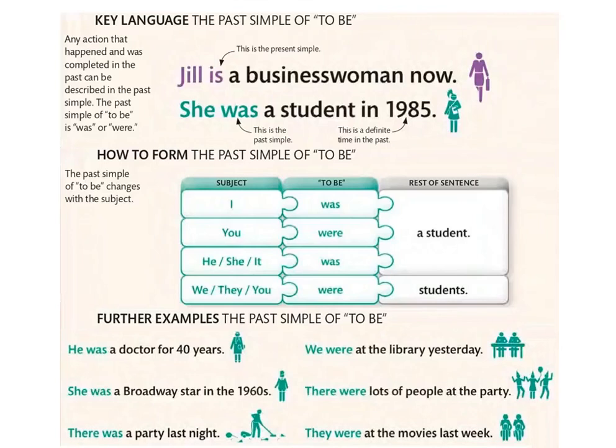The past simple of to be changes with the subject. I was a student — أنا كنت طالب. You were a student — أنت كنت طالب. He / she / it was a student. We / they / you (plural) were students — نحنا وهما وانتو كنتوا students.